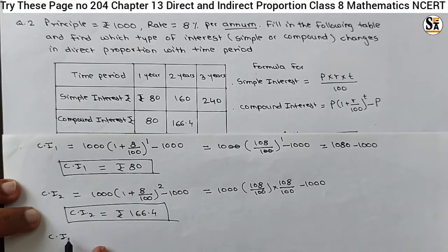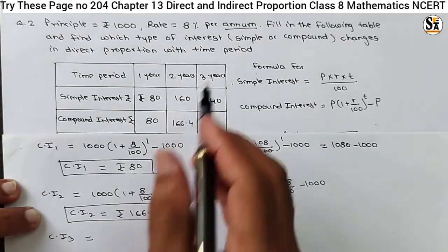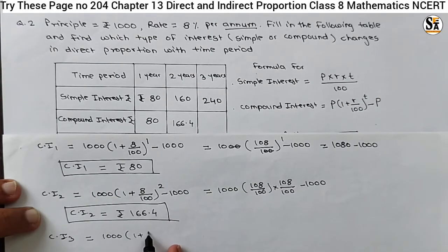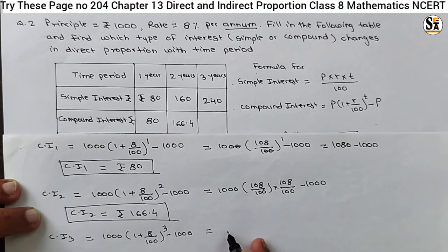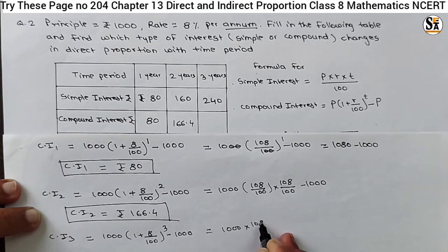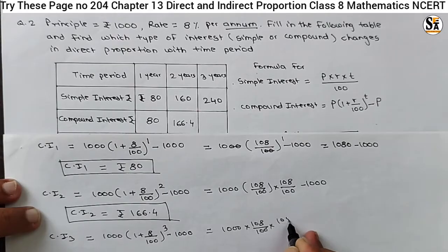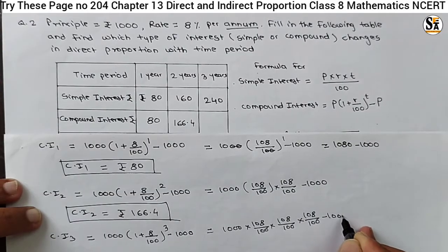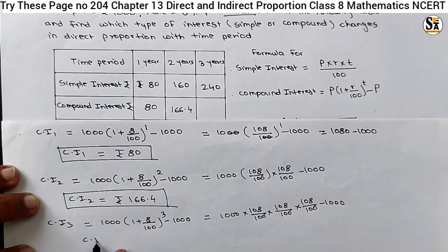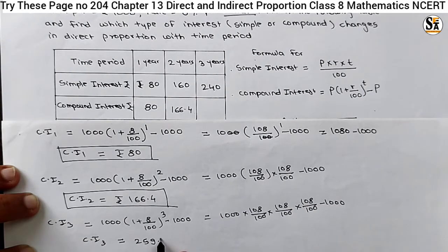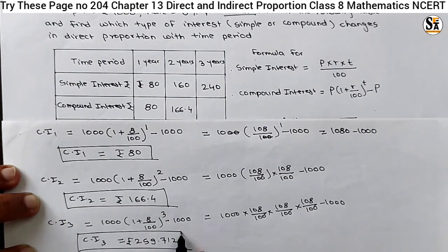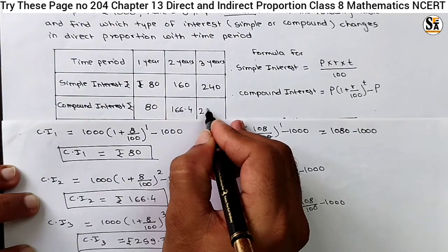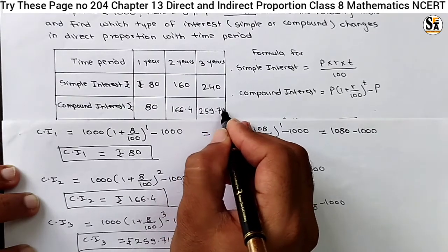Similarly, find out the compound interest for period 3 years: 1000 × (1 + 8/100)^3 − 1000 = 1000 × (108/100) × (108/100) × (108/100) − 1000. Solving this, CI3 = Rs 259.712. Put these values in the table — Rs 259.712.